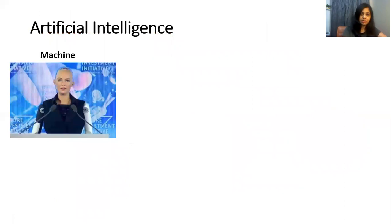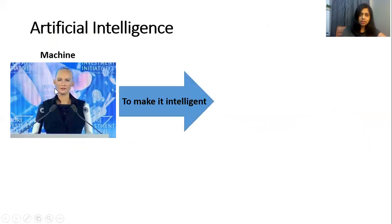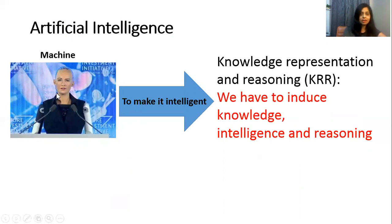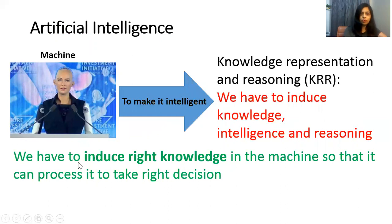So what is artificial intelligence? This is Sophia — you all know this is a machine. To make this machine intelligent, we have to do knowledge representation and reasoning. That means we have to induce knowledge, intelligence, and reasoning into this machine — we have to enter information, knowledge, and data into it so that it can work like a human, think like a human, and make decisions like a human. We have to induce the right knowledge so that it can process that knowledge and take the right decision.